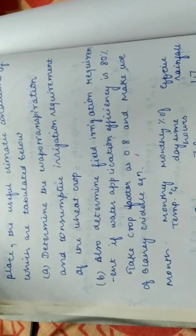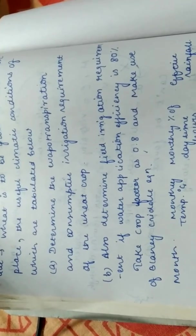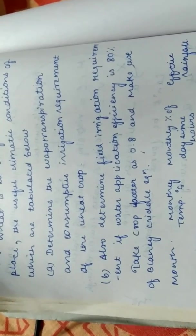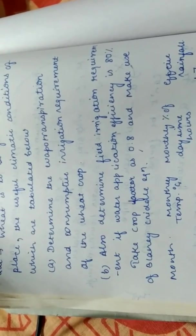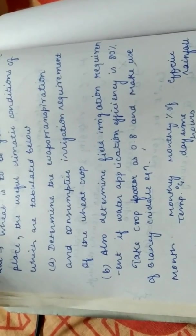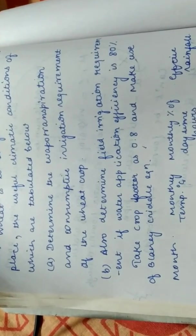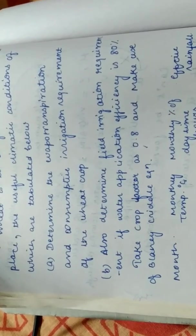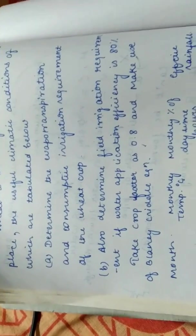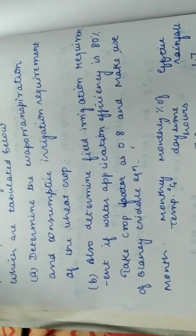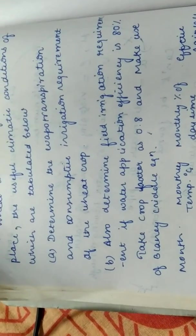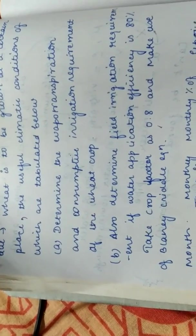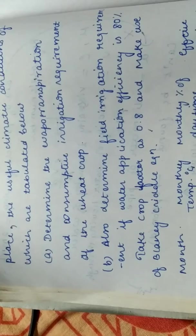So consumptive use is how much amount of water is used by a plant for its growth and how much extra water we have to supply. In addition to rainfall, how much we need to supply from our end by any method of irrigation, be it from tube well, be it from canal, be it drip irrigation. So whatever way you supply this extra water to meet the consumptive use, that is called your consumptive irrigation requirement.